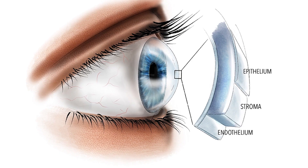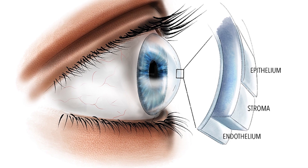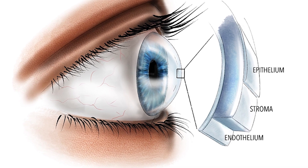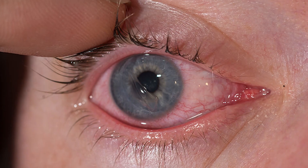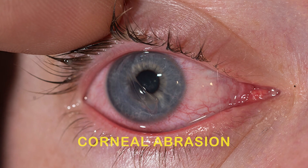The cornea is the clear area in the center of the front of the eye through which we see. When the cornea is scratched, the injury is called a corneal abrasion. Most of the time, small corneal abrasions will heal in a few days. Even a small injury to the cornea can be very painful.